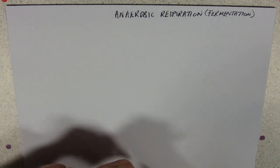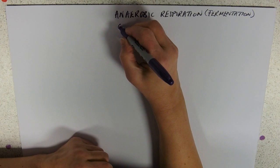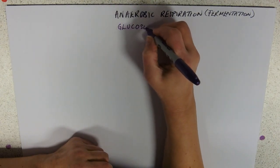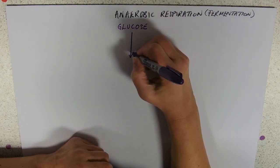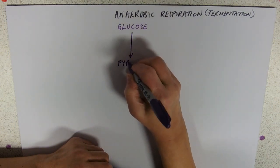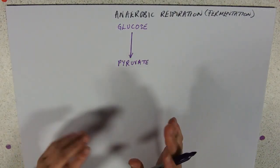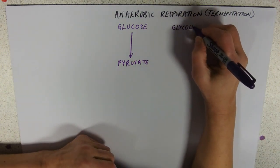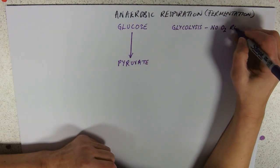As far as your syllabus is concerned, anaerobic respiration is what happens if there is no oxygen present. If there is no oxygen present, our organism can still do glycolysis. So we can still start with glucose and make pyruvate, and all that can happen in glycolysis with no oxygen required.